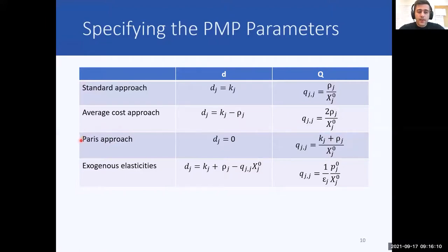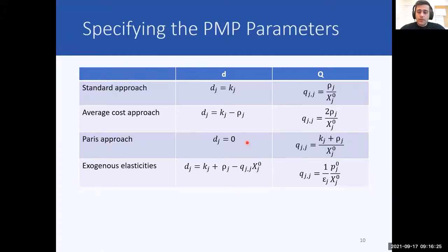The third one is the Paris approach, named after a famous scientist in mathematical programming. In his specification, he sets parameter D equal to zero and calculates Q using a specific formula. Although this provides a generally more realistic property of producer response, the quantitative specification remains somewhat arbitrary.